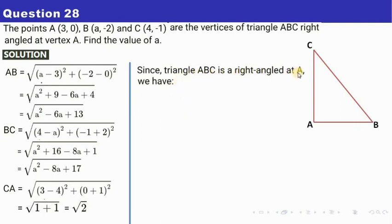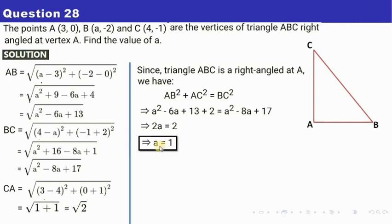So since a triangle ABC is right angled at A, we have the Pythagoras theorem says this with the value. So AB² is this much. AC² is 2. AC or CA is √2. So that is why its square becomes 2 only. And BC² is this much. So from here, after simplification, you will see 2a equals to 2, that is a equals to 1. So the value of a from this turns out to be equal to 1. So you may pause the video to note down.